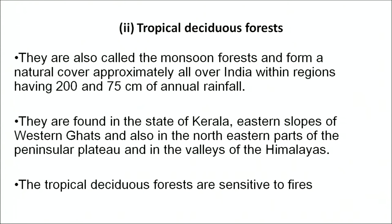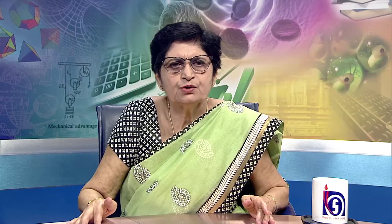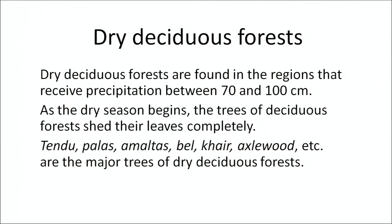Tropical deciduous forests are found in the states of Kerala, eastern slopes of the Western Ghats, northeastern parts of peninsular India, and valleys of the Himalayas. These forests are very sensitive to fires and can be divided into two types: moist deciduous and dry deciduous. Moist deciduous forests are found on the Eastern Ghats, Chhota Nagpur Plateau, eastern parts of Madhya Pradesh, south Bihar, and west Odisha. Dry deciduous forests are found in regions receiving 70 to 100 cm of precipitation, and as the dry season begins the trees shed their leaves completely.